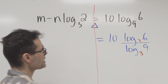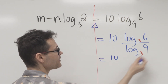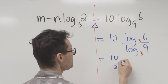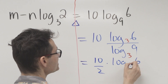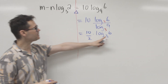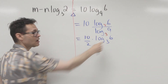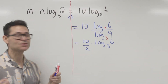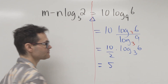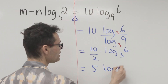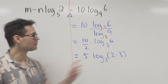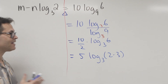On the next line, I take the 10 in the numerator and divide it by 2 — since log of 9 base 3 is 2 — giving 5 times log of 6 base 3. Now I need to figure out how to get a log of 2. Since 6 is 2 times 3, I can write this as 5 times log of (2 × 3) base 3. That's the product law: 2 times 3 is 6.